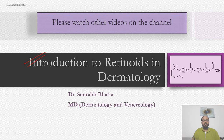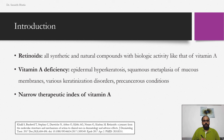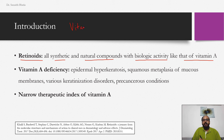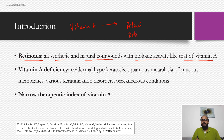So what exactly are retinoids? Retinoids are all synthetic and natural compounds with biological activity like that of vitamin A. Vitamin A is also known as retinol. Certain classes of molecules that function like retinol are called retinoids — they can be natural or synthetic, but their biological activity is like that of vitamin A.